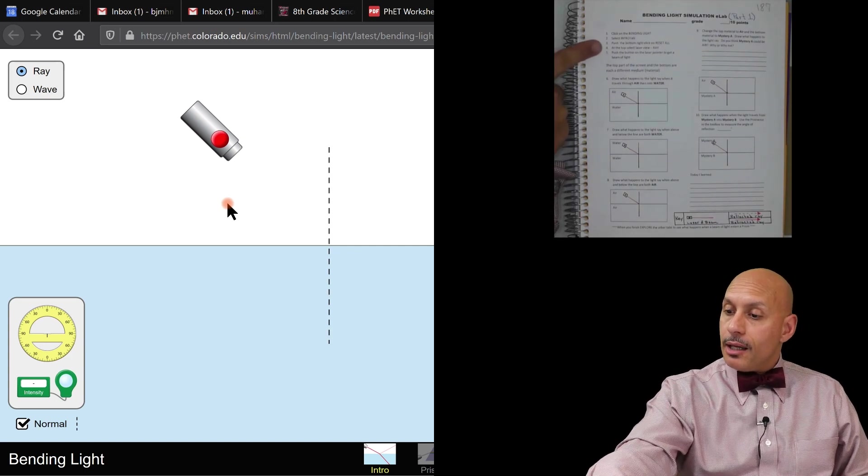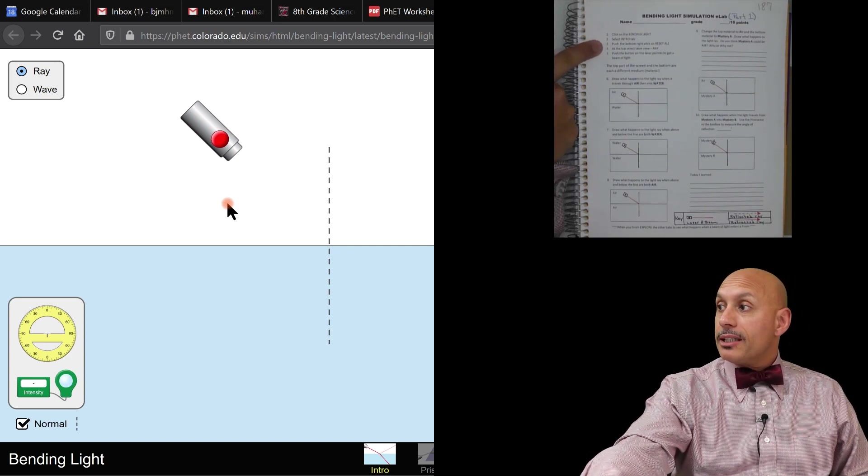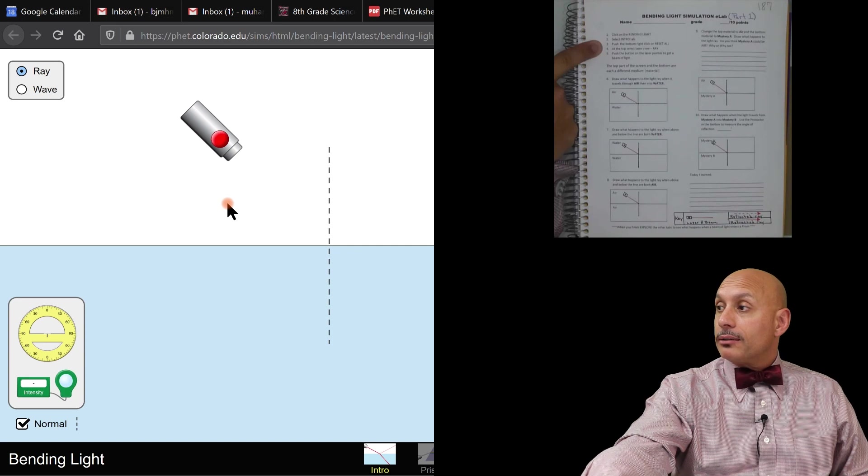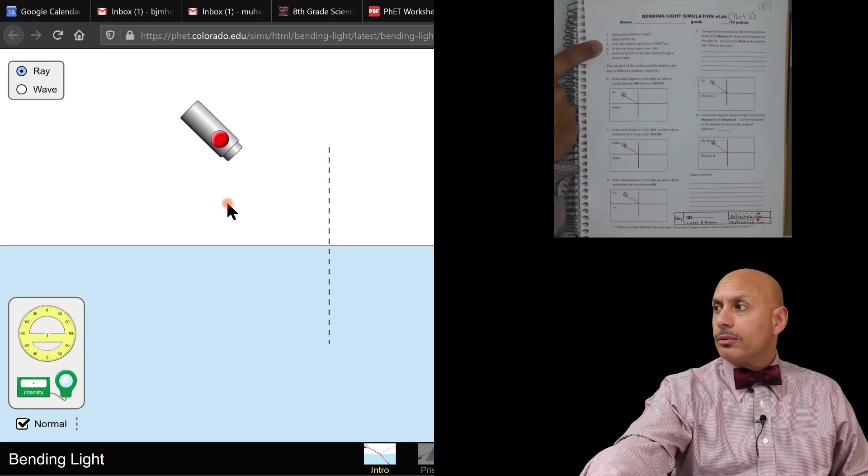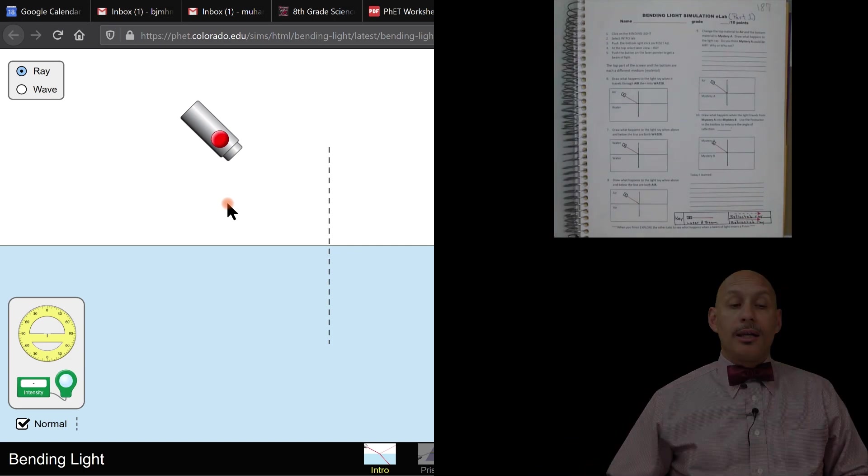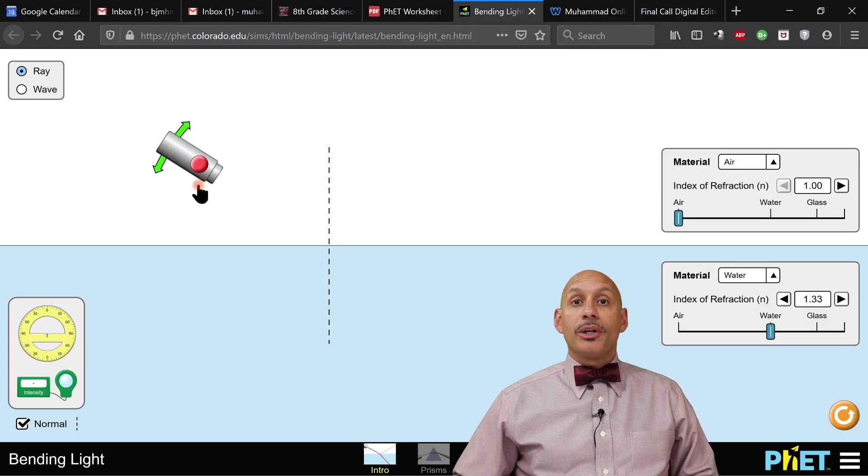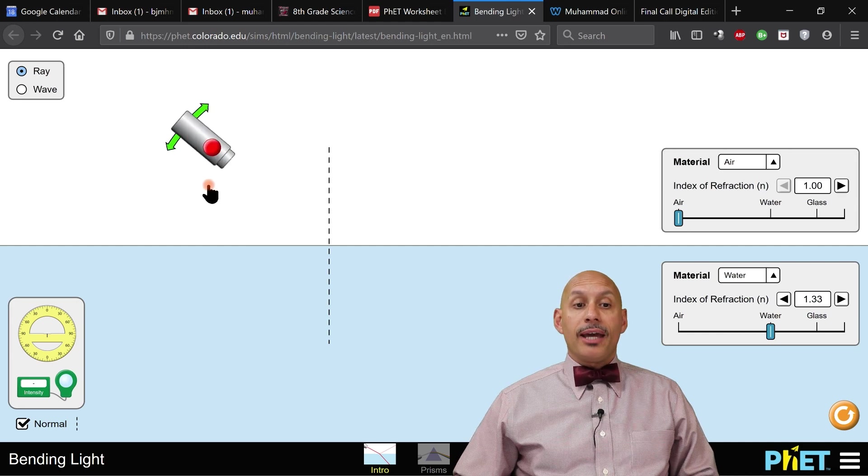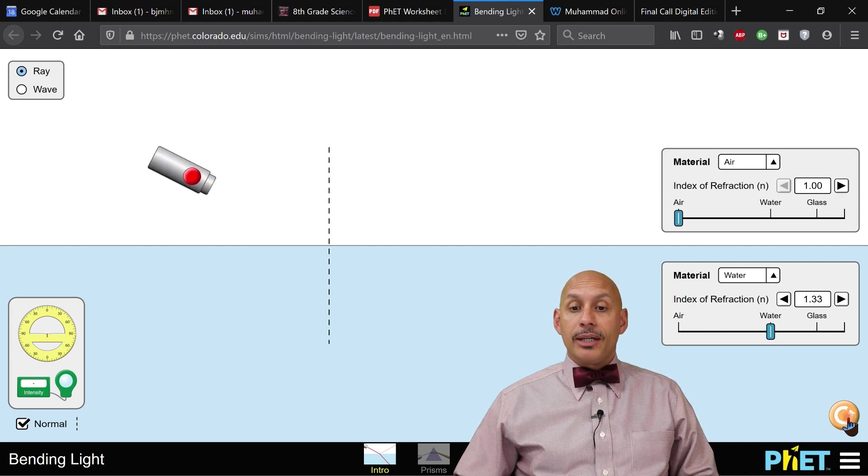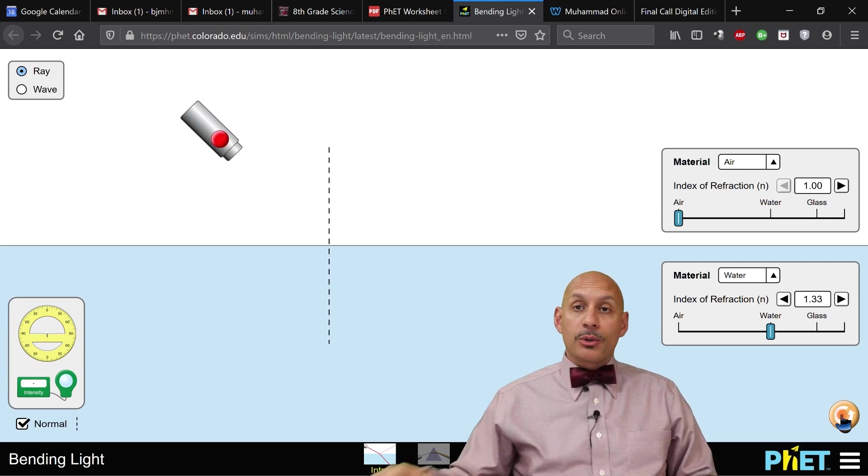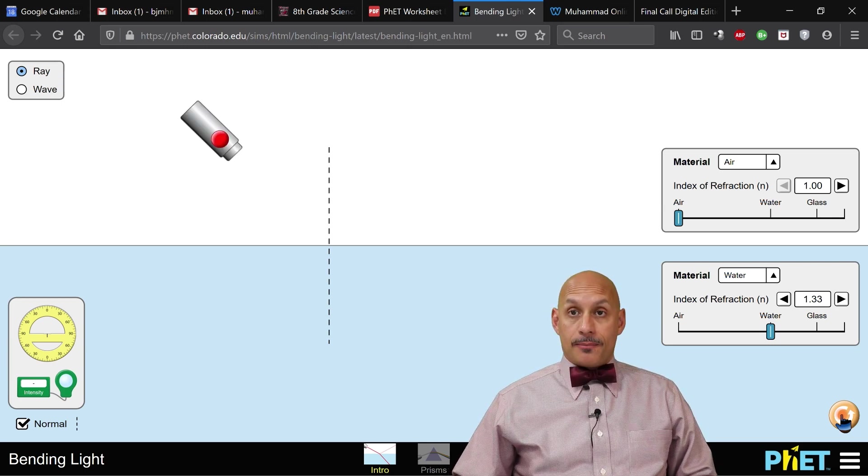Then we have the laser pointer with the laser beam always hitting right at this corner of what's called the normal. This is called the normal, and we want to maintain this angle. You'll notice it says for number three, push the bottom right, click on reset all. Make sure we have it where we need to have it, so we got to hit that reset button so it goes back to its original position.